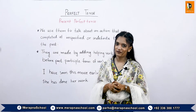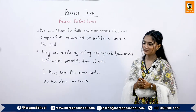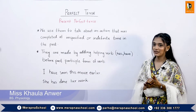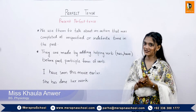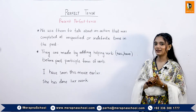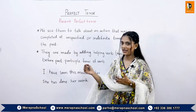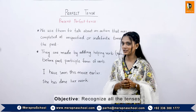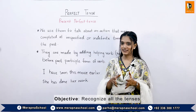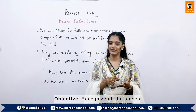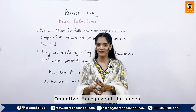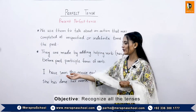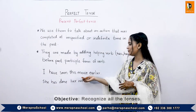Now we will dig into the detail of the present perfect tenses. We use the present perfect tense to talk about an action that was completed at an unspecified or indefinite time in the past. They are made by adding the helping verb has or have before the past participle form of the verb. The formation of the sentences is: subject, then helping verb has or have, then the past participle form of the verb, then the object. For example: I have seen this movie earlier.